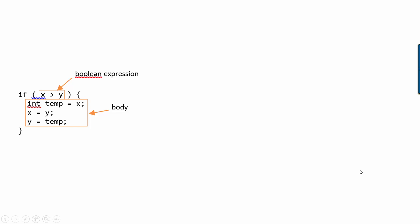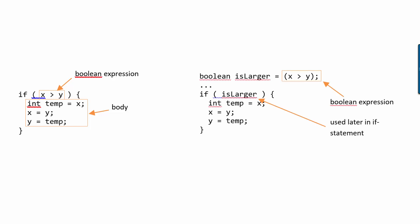So one thing you might not know is that you can take the boolean expression out and evaluate it on a line by itself and save the result into a boolean variable. So that's what's happening here on the right. Instead of having x bigger than y inside the if statement, sometime before the if statement, I can ask is x larger than y?